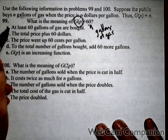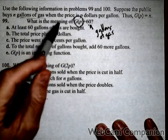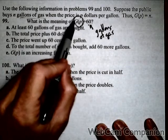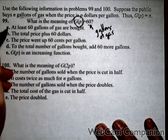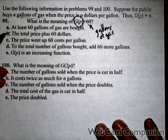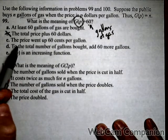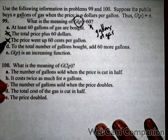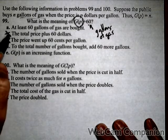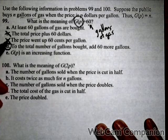So let's look through our answers. At least 60 gallons of gas are bought. Well, not really, because it's 60 plus the amount that the public buys. The total price plus 60 dollars. Well, we know that's not it because 60 is not dollars. It has to be gallons of gas because it's being added to our output. The price went up 60 cents per gallon. Again, it's not price. It has to be gallons. To the total number of gallons bought, add 60 more gallons. So there's our answer.